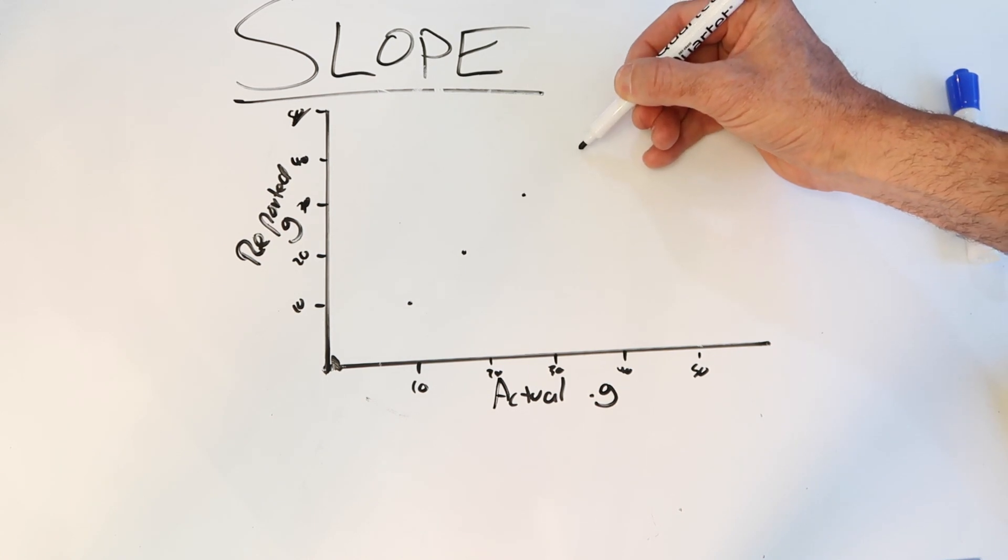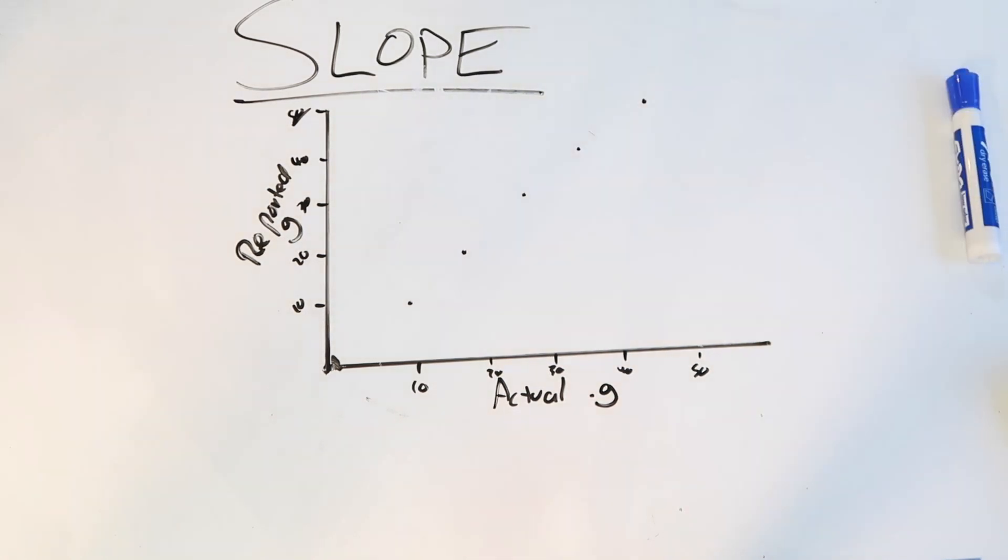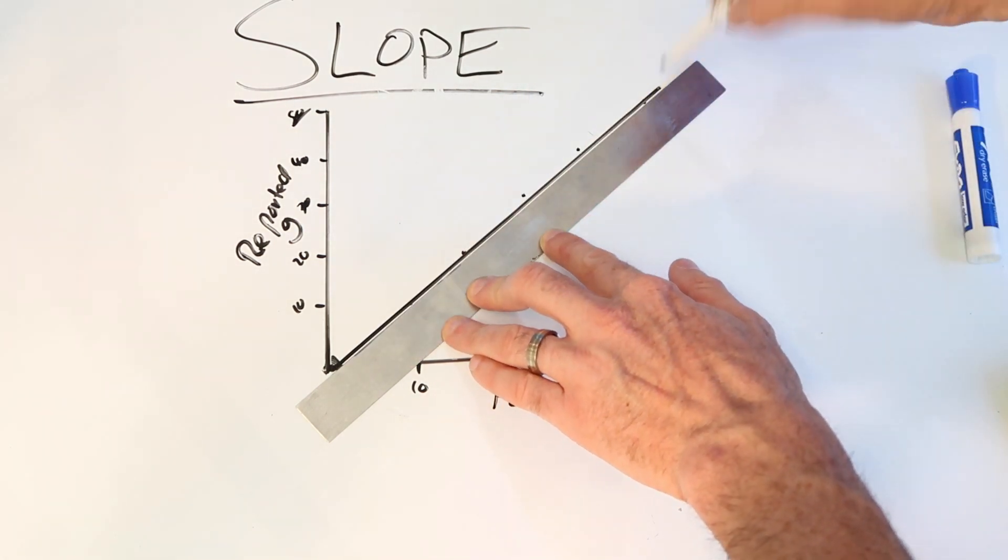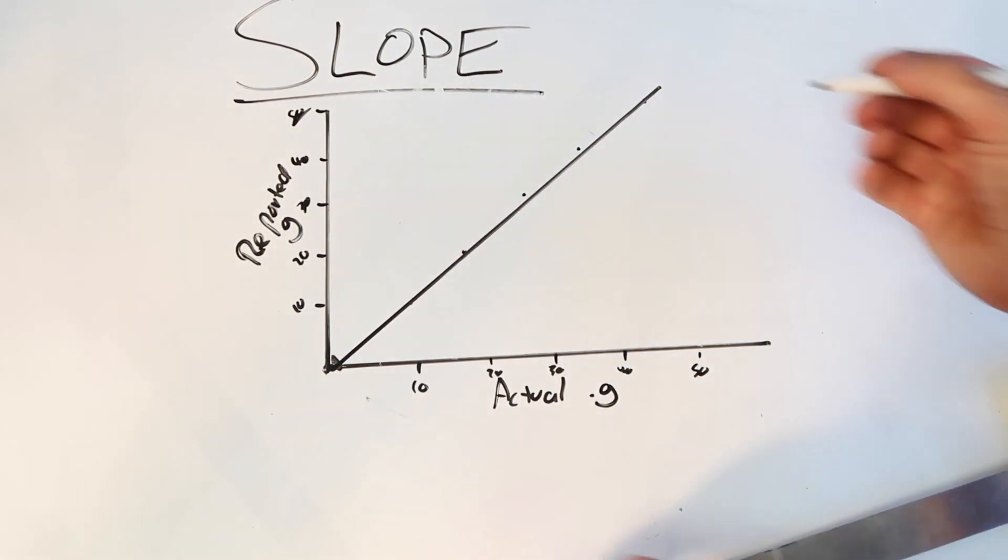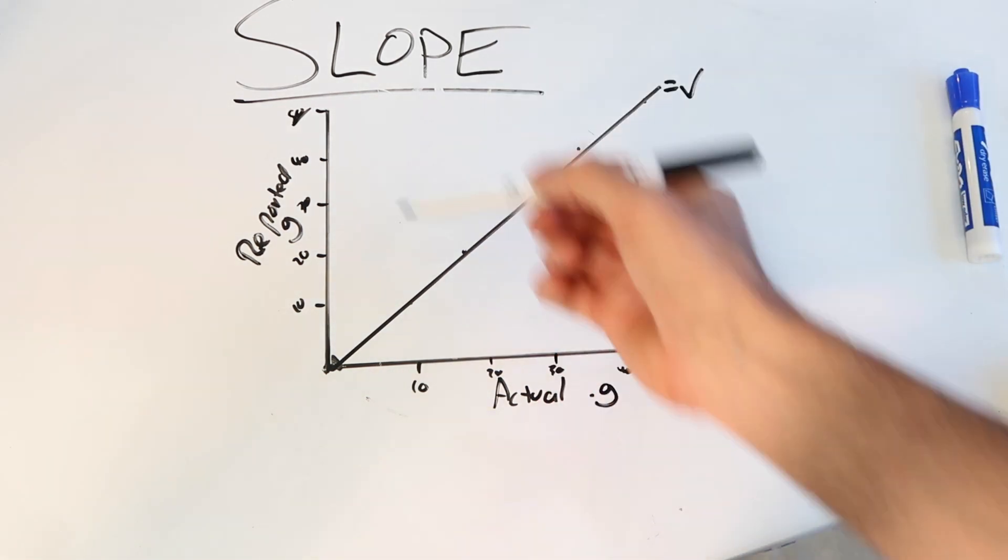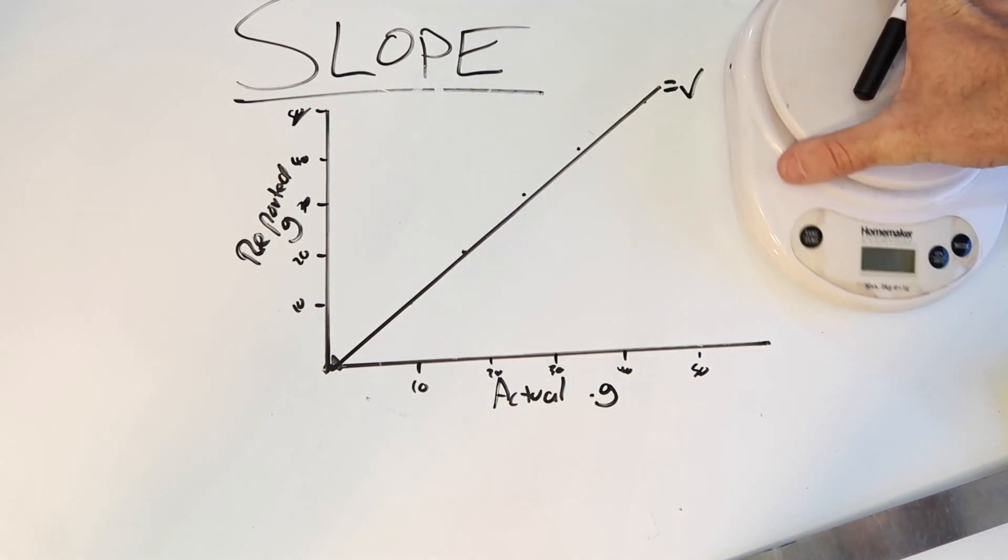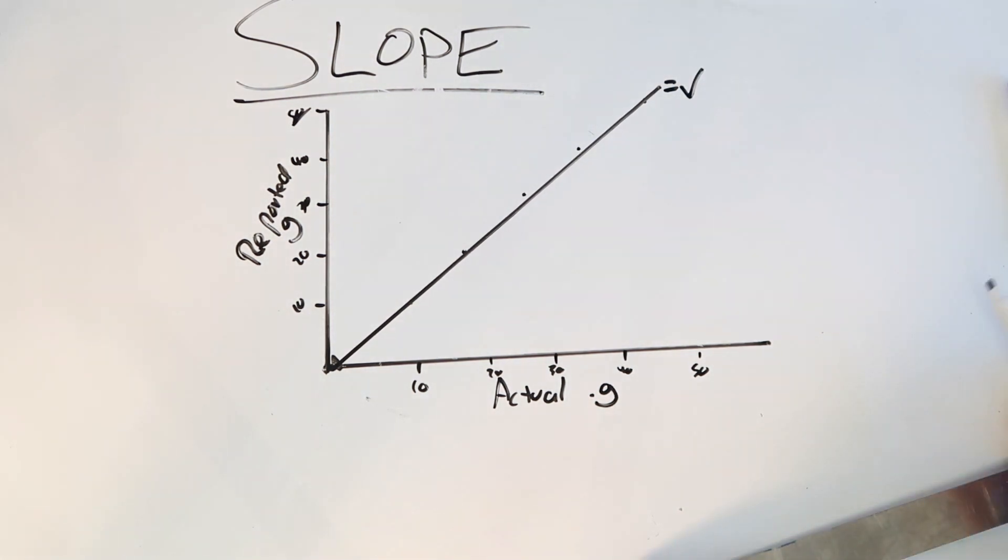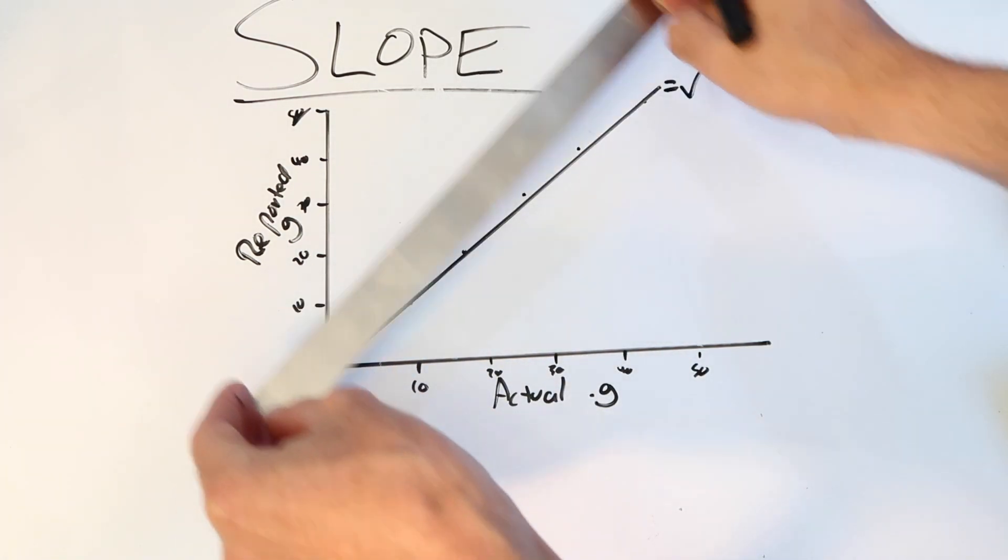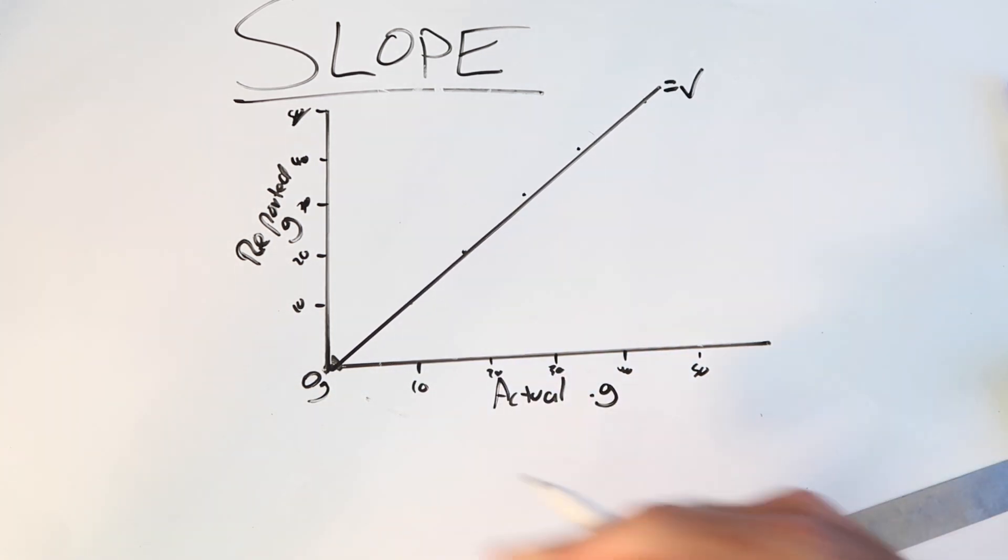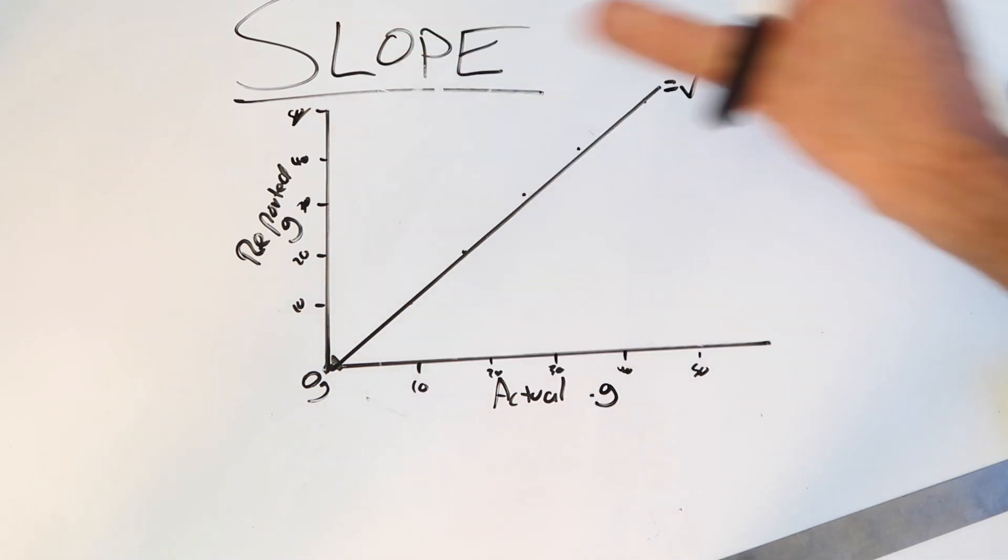In an ideal world, 10 should equal 10, 20 should equal 20, 30-30, 40-40, 50-50. All done by hand. Hopefully my lines aren't... okay I'll pay that, that's not too bad. That, that line there, the actual 10 grams is the reported 10 grams. So in a perfect world, that's your correct slope.